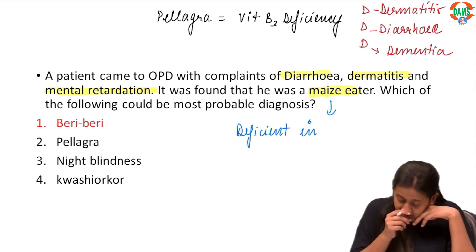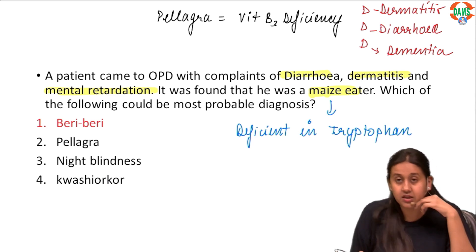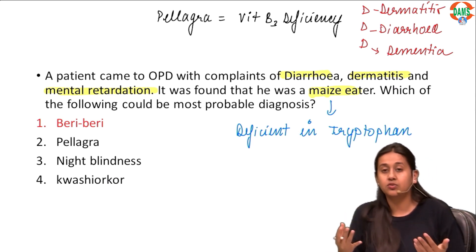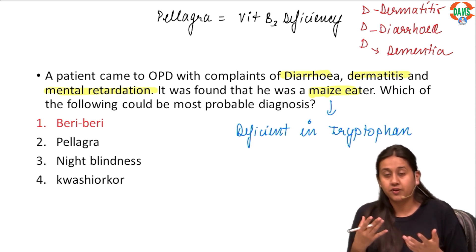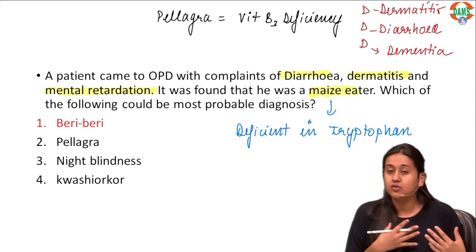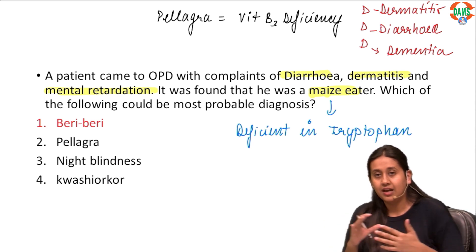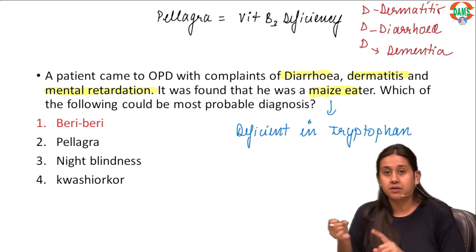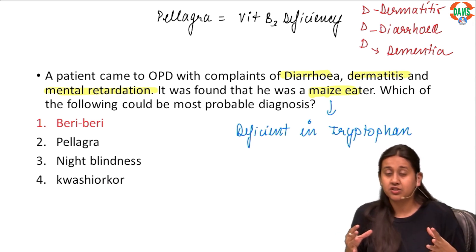Maize is deficient in tryptophan, and tryptophan is a precursor of niacin. So if somebody is taking only maize in their diet, they will be deficient in tryptophan, and if there is no tryptophan there will be no production of niacin in their body, and ultimately they will have a deficiency of niacin.